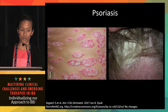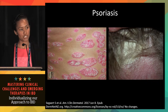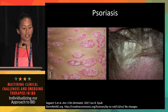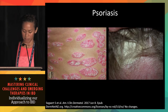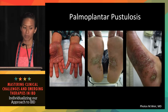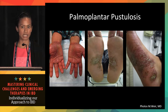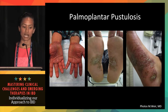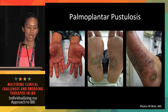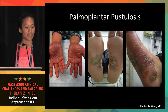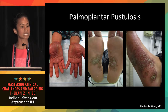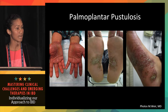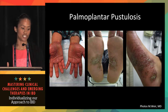In classic psoriasis, the lesions are much more well-demarcated with really silver micaceous scale. Areas of predilection include the scalp, extensor surfaces like elbows and knees, and the sacrum. Palmoplantar pustulosis is considered by some a variant of psoriasis and by others its own entity. It is characterized by recurrent crops of sterile pustules that turn red-brown with age, appearing on erythematous patches with scaling on the thenar and hypothenar eminences and medial and lateral aspects of the feet.